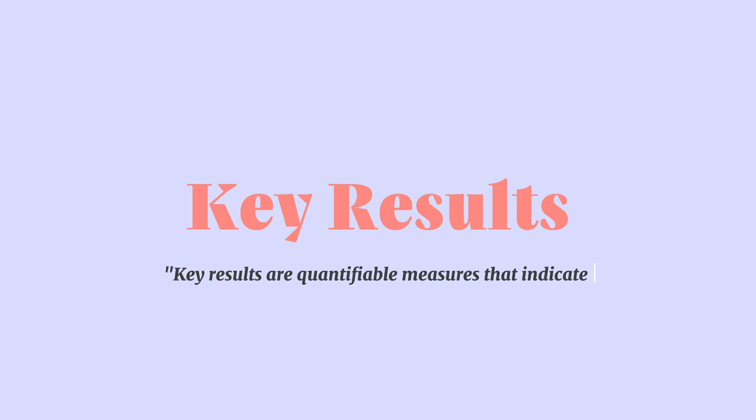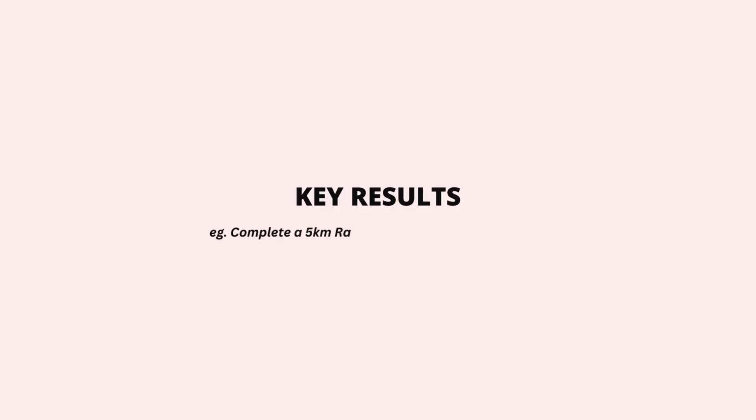After setting all of our objectives, we then look at key results. Key results are quantifiable measures which indicate progress towards achieving an objective. For example, if you wish to become a healthier and more active individual, a key result would be to complete a five kilometer race within 30 minutes by June 2024.